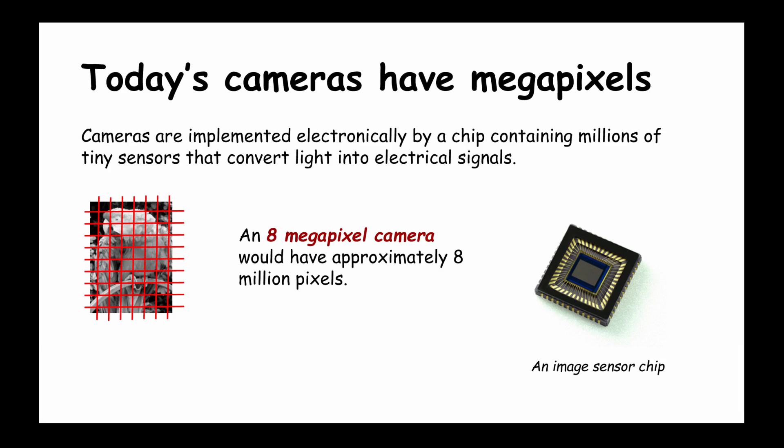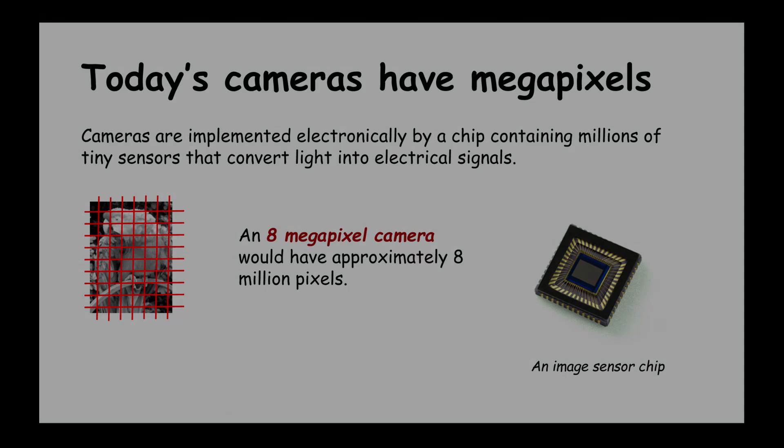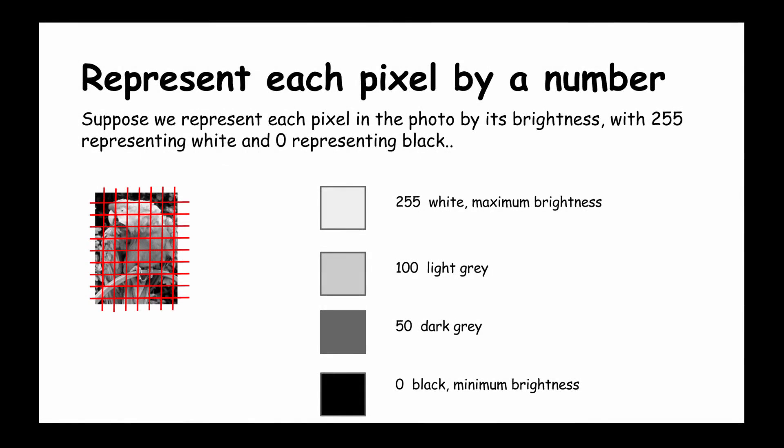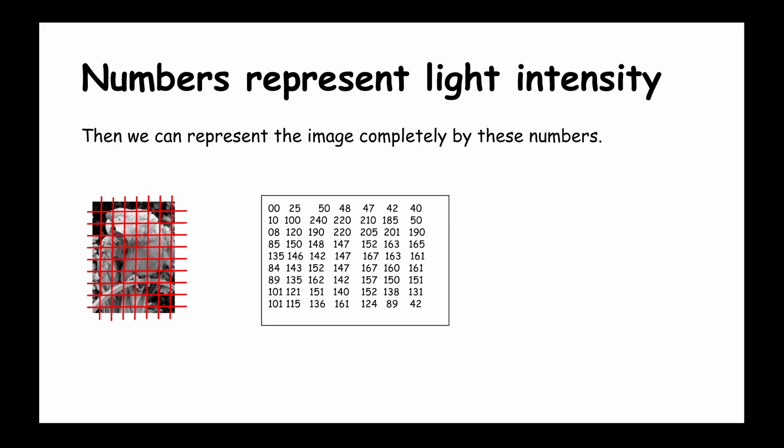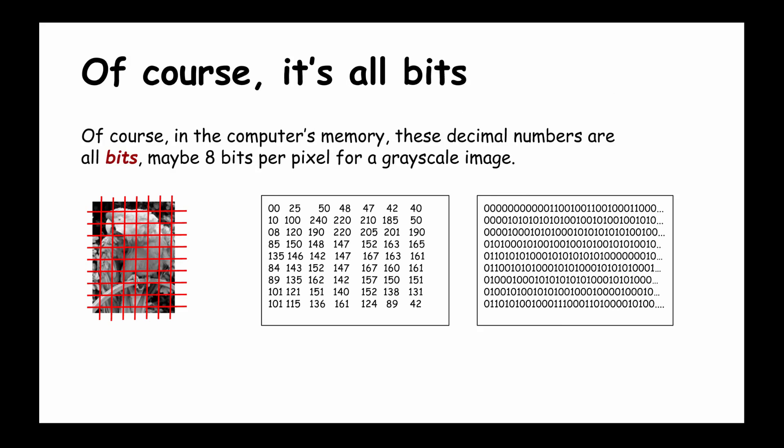We're going to represent each pixel by a number representing the brightness of the light coming in. We'll let 255 represent maximum brightness or white, zero will be minimum or black, and in between we've got various shades of gray. If we do that, then we can represent the whole image by these numbers. Here's a 7 by 9 array of the numbers that I made up that represent each individual pixel in this diagram on the left.